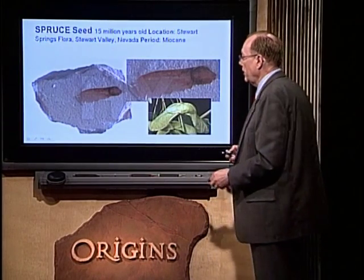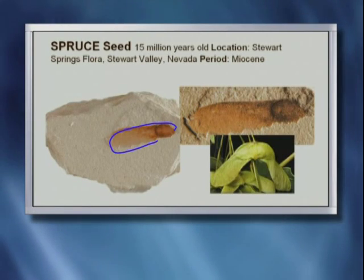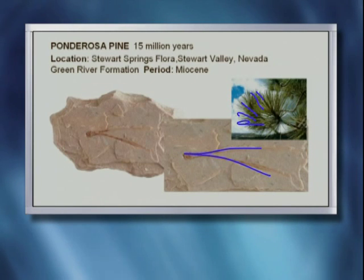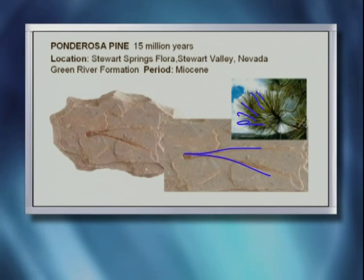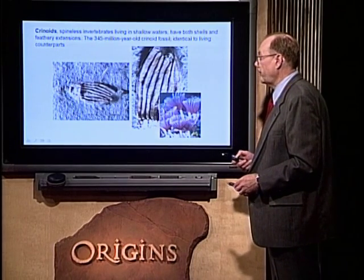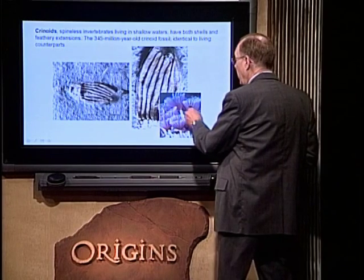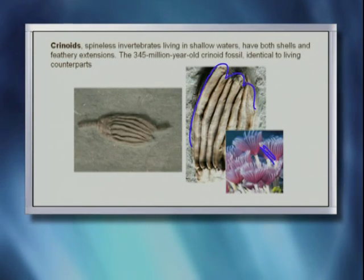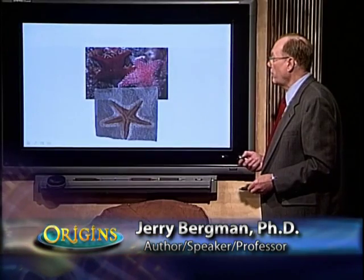Spruce seed — we see these every summer, every spring. Ponderosa pine, a pine leaf, very distinct. And you can see the pine leaf right here, very distinct in the fossil record. And crinoids — they're invertebrates that live in shallow water. You can see modern crinoids here, and in the fossil record, when you examine this under a microscope carefully, you can see the enormous similarity. The external morphology is very, very similar to modern day examples.